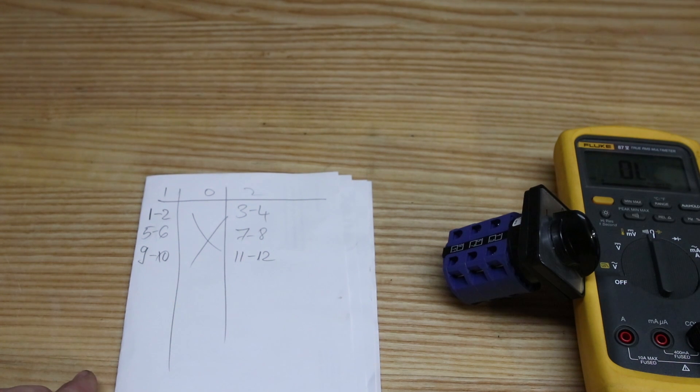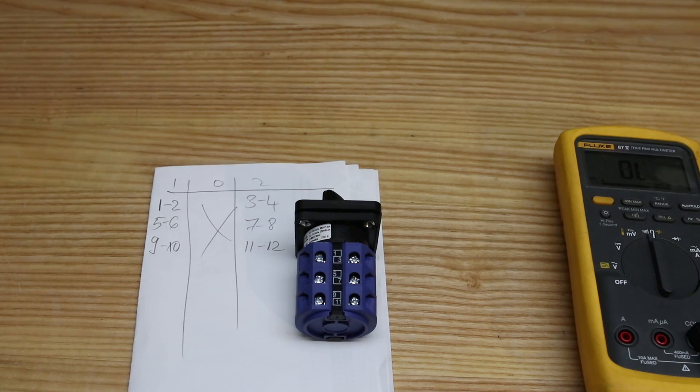In my case, what I found is that in position one, number one is connected to two, five to six, nine to ten. Nothing is connected in zero, so zero is completely disconnected. All the connections are completely off. In position two, three to four, seven to eight, and eleven to twelve are actually connected. These results are specific to this switch and manufacturer.